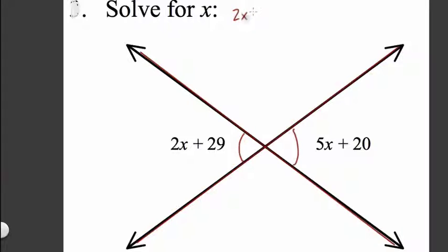So I would write down 2x plus 29 is equal to 5x plus 20.